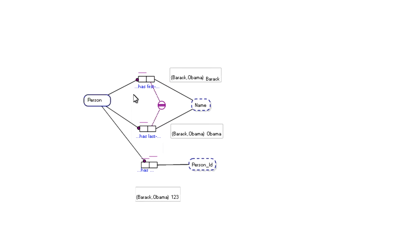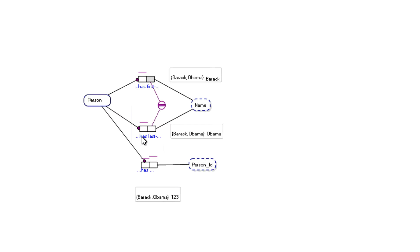And here we can see that person has first name — Barack Obama has first name Barack. Person has last name — Barack Obama has last name Obama. And we can see that person Barack Obama has person ID 123. So the uniquely identifying information for person is the combination of first name and last name: Barack Obama. And the relevant facts have Barack Obama as the unique identifier for that person, with person ID 123.